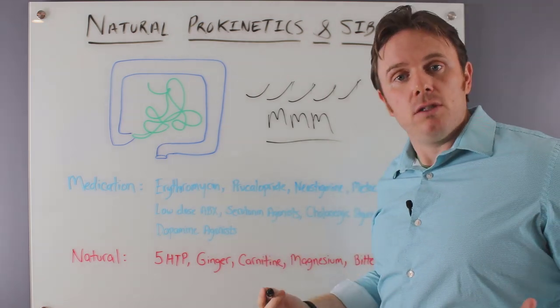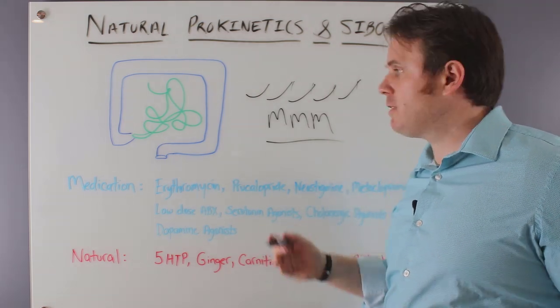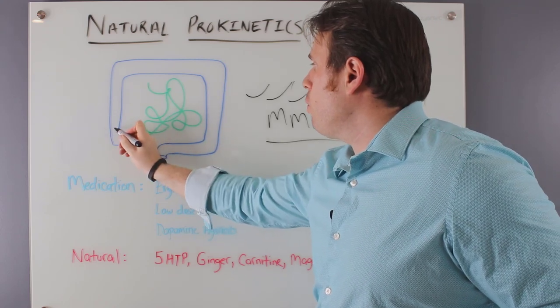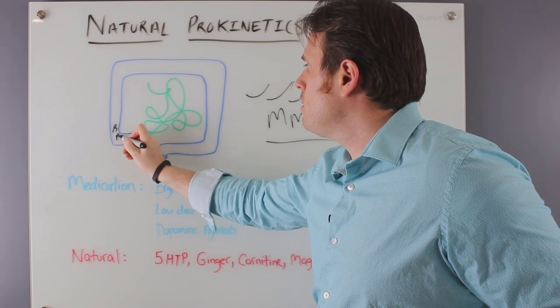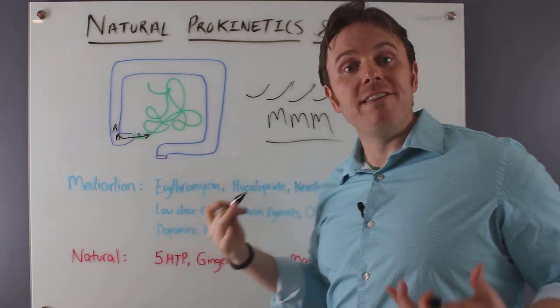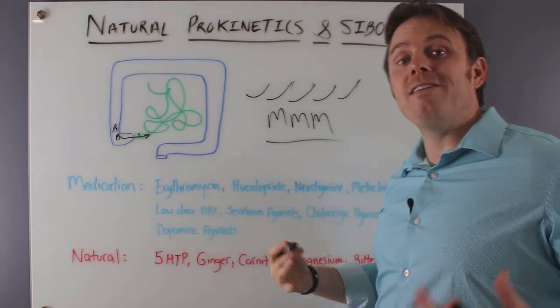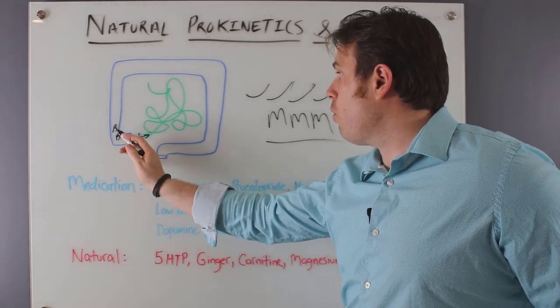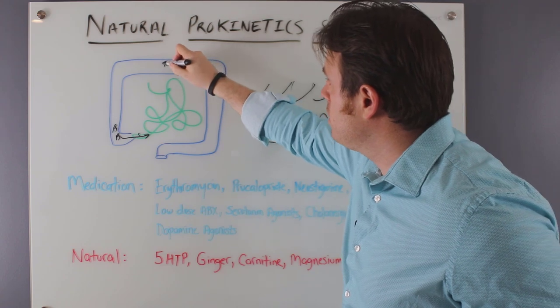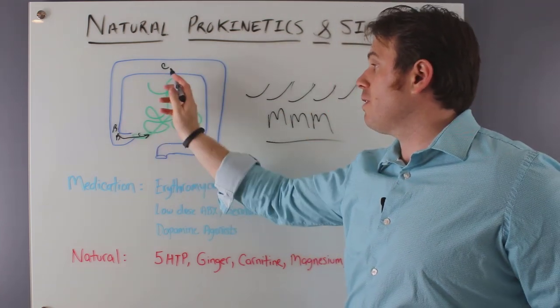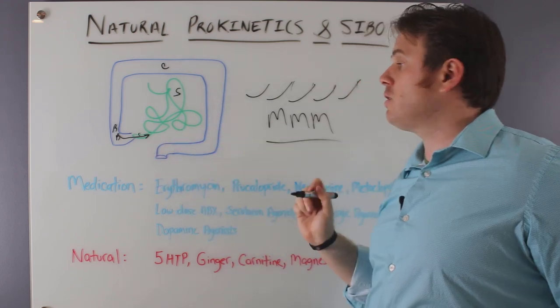Now, one of the major theories in why that gets disrupted is because of bad bacteria from the colon making their way back up into the small intestine. This is known as small intestinal bacterial overgrowth. So these bacteria move from the colon, this is the colon here, and this is the small intestine. So it moves from the colon or the large intestine back into the small intestine.